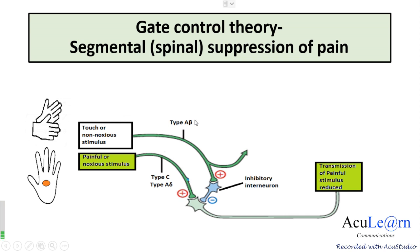The touch fibers — that is the A-beta fibers — are activated, which convey the touch information to the somatosensory cortex through the dorsal column medial lemniscal pathway.